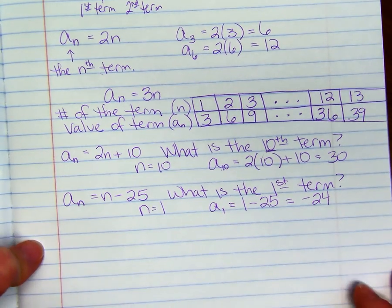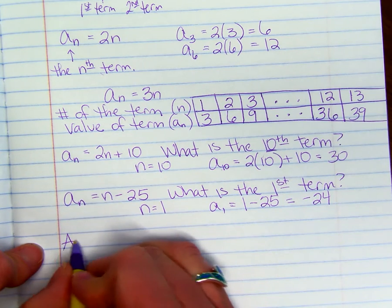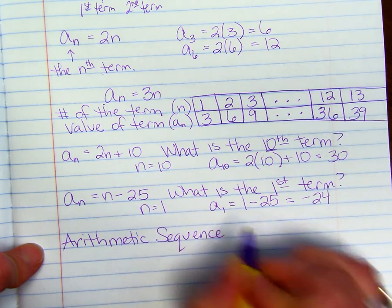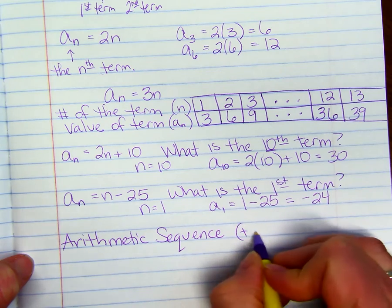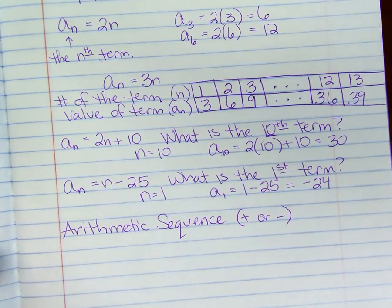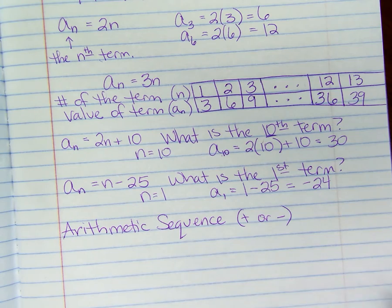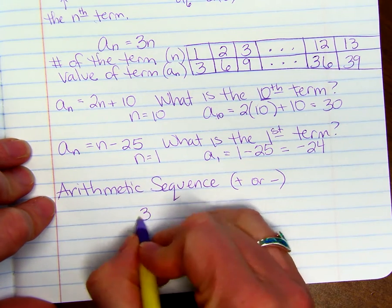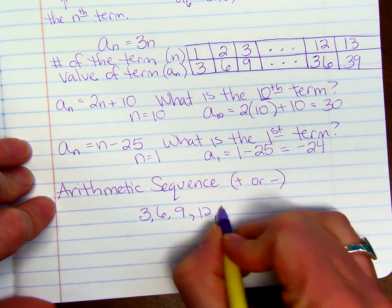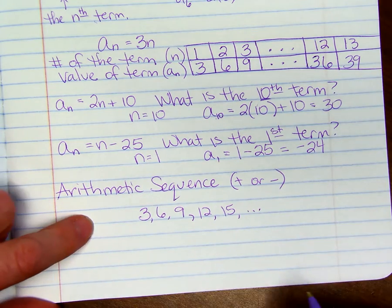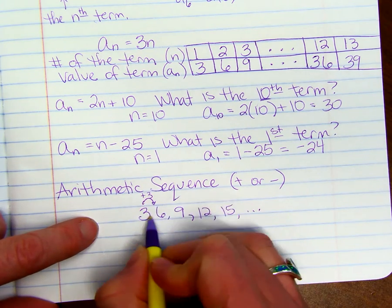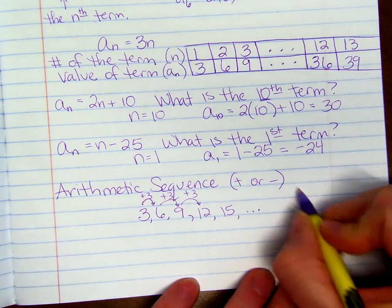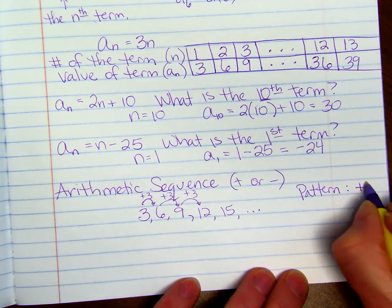Now we can have two different types of sequences. One is called the arithmetic sequence. That's where we're adding or subtracting the same amount each term. Here's an arithmetic sequence: 3, 6, 9, 12, 15, and so on. We are adding 3 every time. From 6 to 9, we'd be adding 3. 9 to 12 plus 3. So the pattern is plus 3.